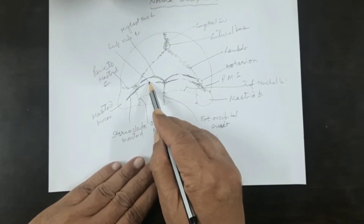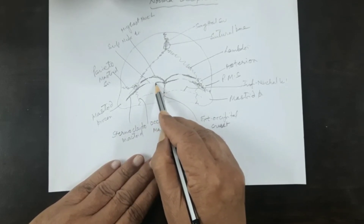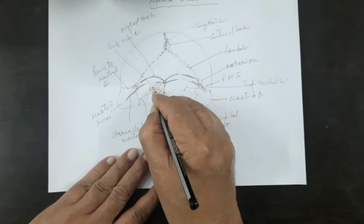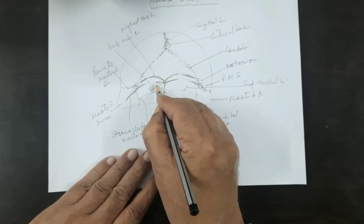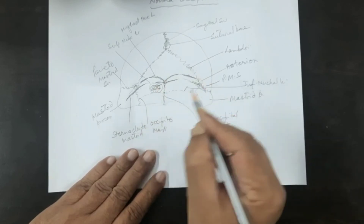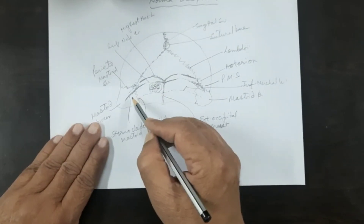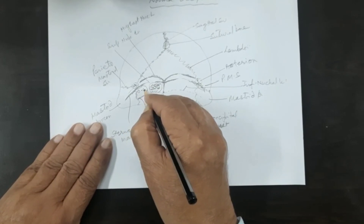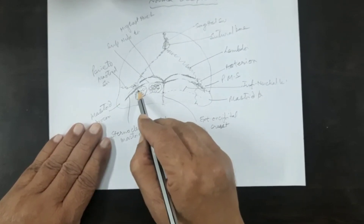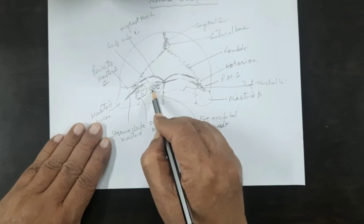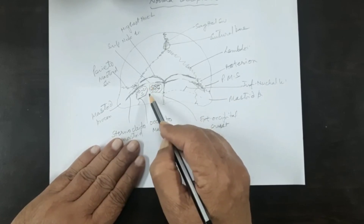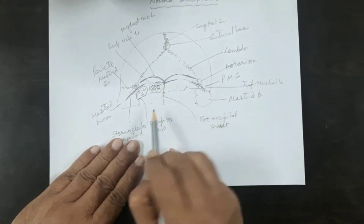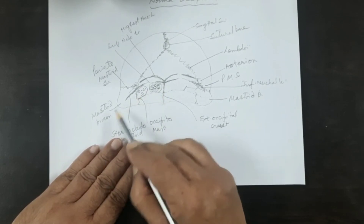The area between the superior nuchal line and the inferior nuchal line gives origin to two strong muscles of the neck. The medial one is called semispinalis capitis. Lateral to it is another muscle called obliquus capitis superior. Semispinalis capitis is placed medially towards the external occipital crest and obliquus capitis superior is laterally towards the mastoid process.